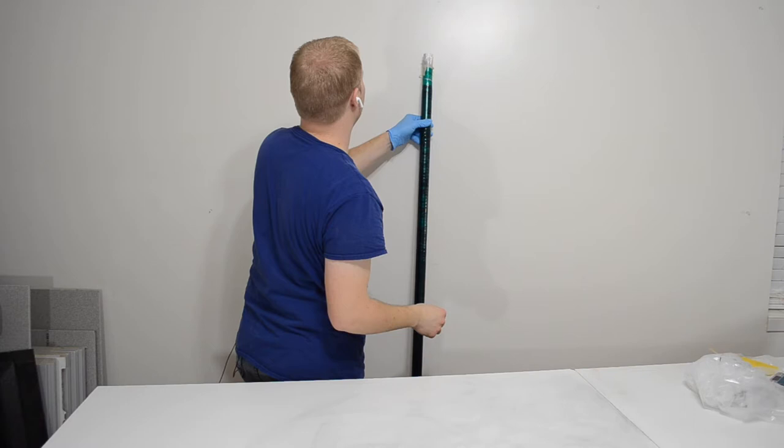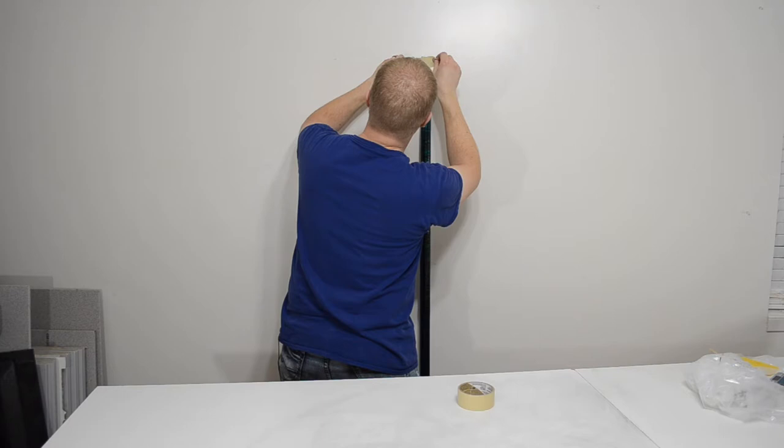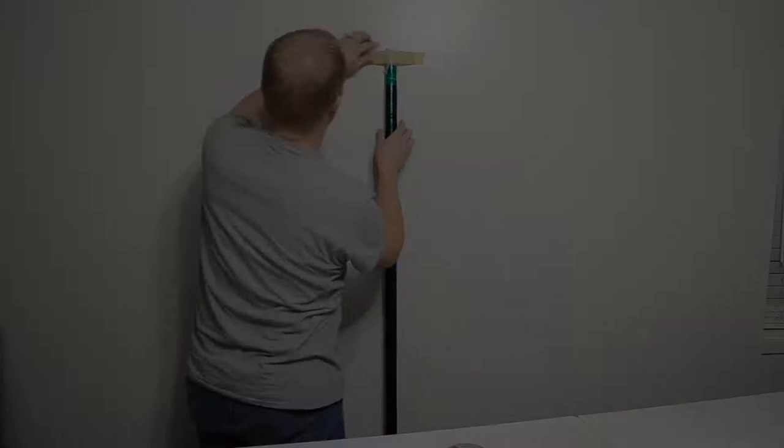I set it up vertically to cure, because I was worried if I laid it on the tabletop, I'd get a flat spot where it was resting on the table. I didn't want flat spots on my shaft, so I stood it up vertically and taped it to the wall to make sure it wouldn't fall.